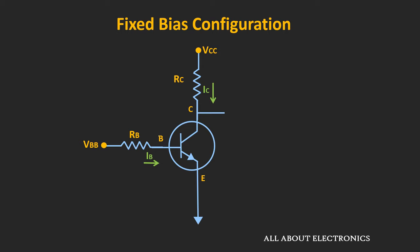To identify the operation of the BJT in the cutoff region is relatively simple. Because when the voltage VBB is zero or it is less than the voltage VBE, then the base current Ib is equal to zero. And we know that the collector current Ic can be given as β×Ib. So if we neglect the reverse saturation current, then the collector current Ic is approximately equal to zero. And due to that, there won't be any voltage drop across the resistor Rc.